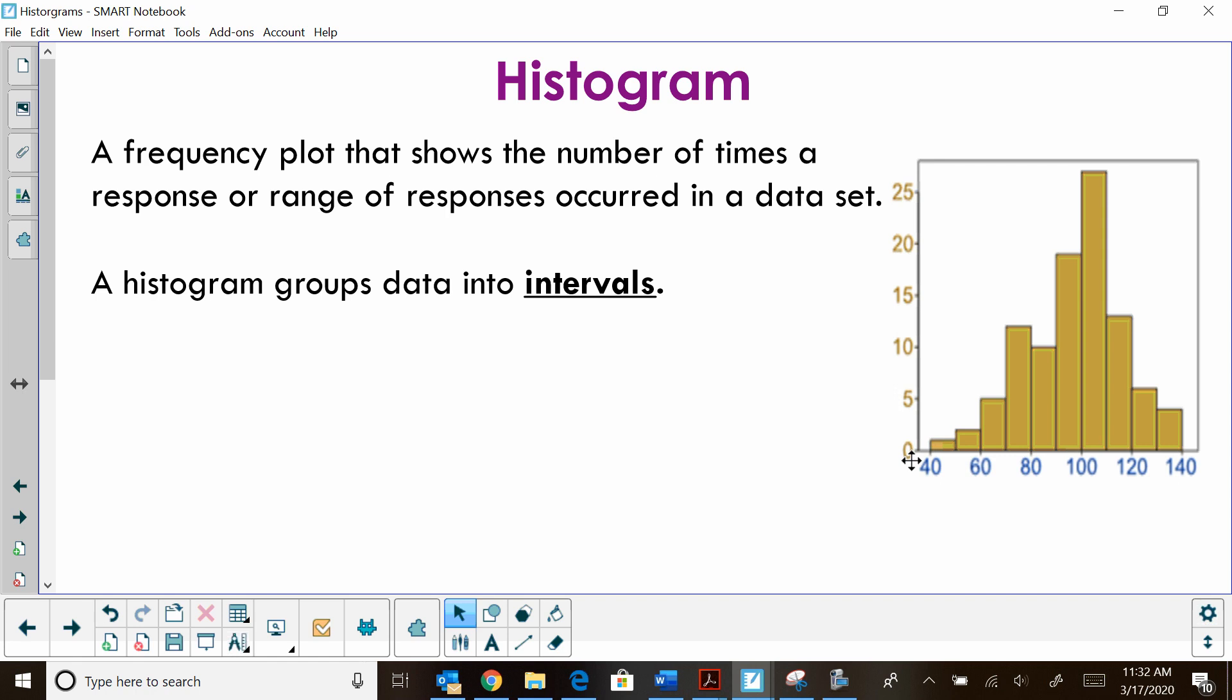So when I go to interpret this, I'm going to have to think of an interval. So how many responses were between 60 and 70, and the answer would be 5. How many responses were between 80 and 90, and that answer would be 10 responses. So we're going to interpret those intervals.